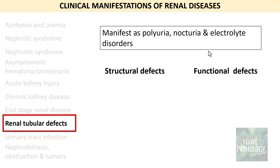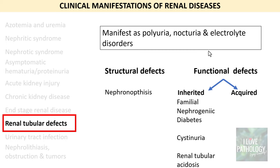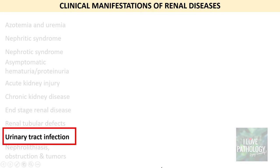Renal tubular defects manifest as polyuria, nocturia, and electrolyte disorders. These defects can be classified into structural or functional defects. Structural defects include nephronophthisis, whereas functional defects can be inherited or acquired. Inherited functional defects include familial nephrogenic diabetes insipidus, cystinuria, and renal tubular acidosis, whereas lead nephropathy is an example of an acquired functional defect of renal tubules.